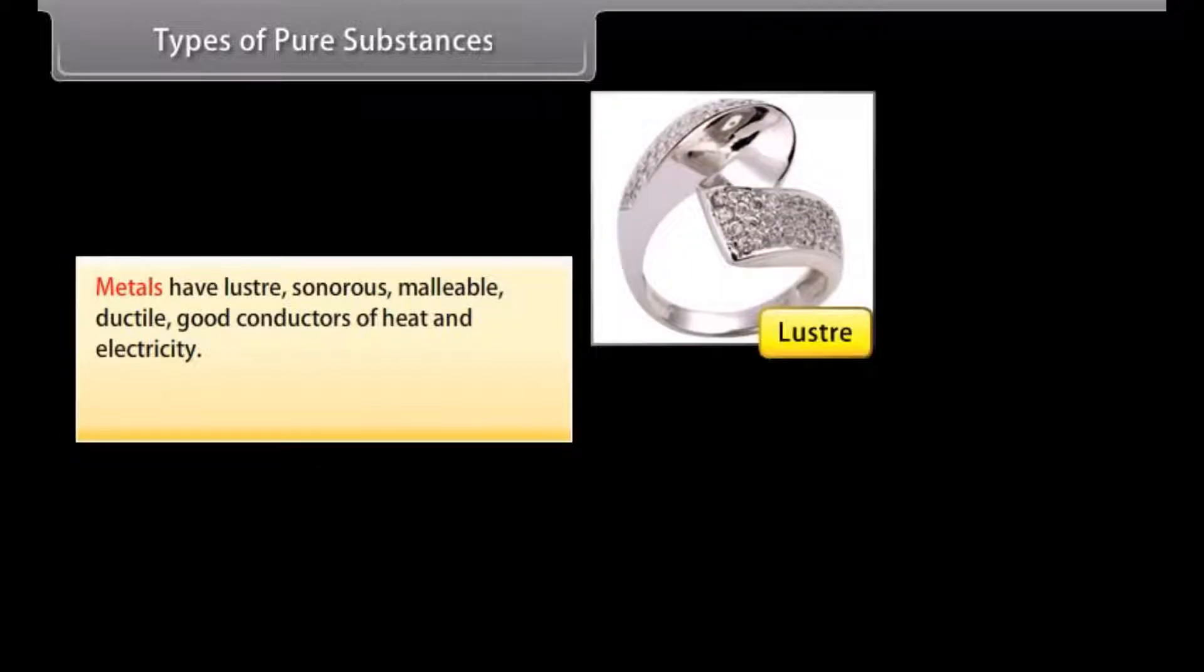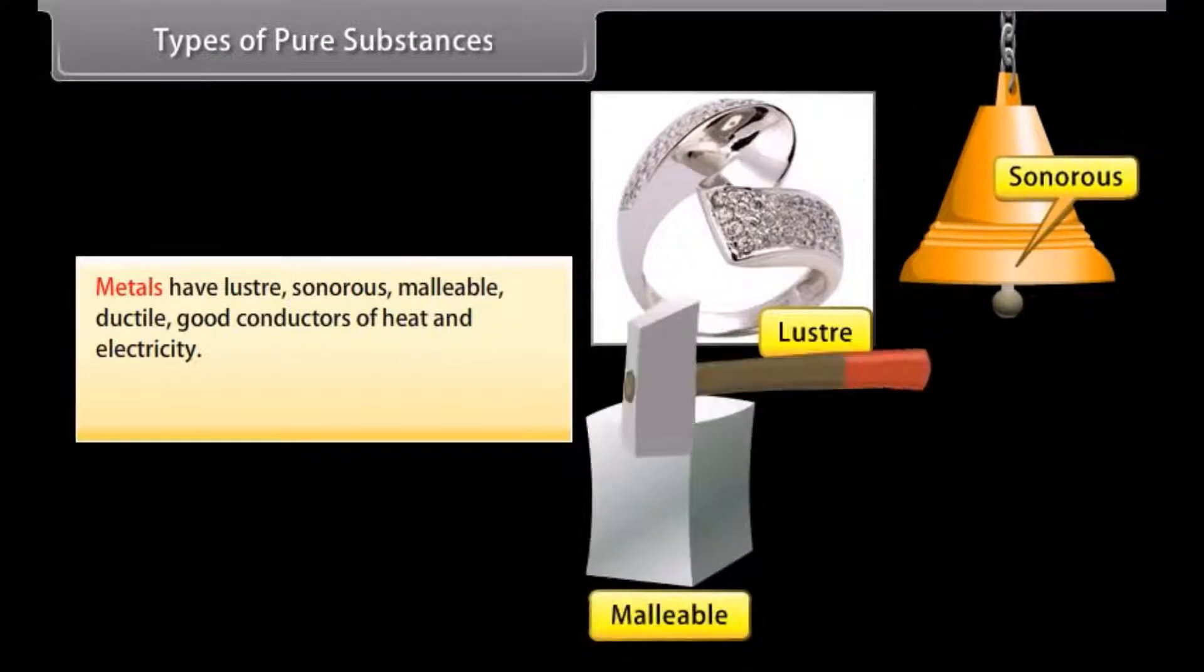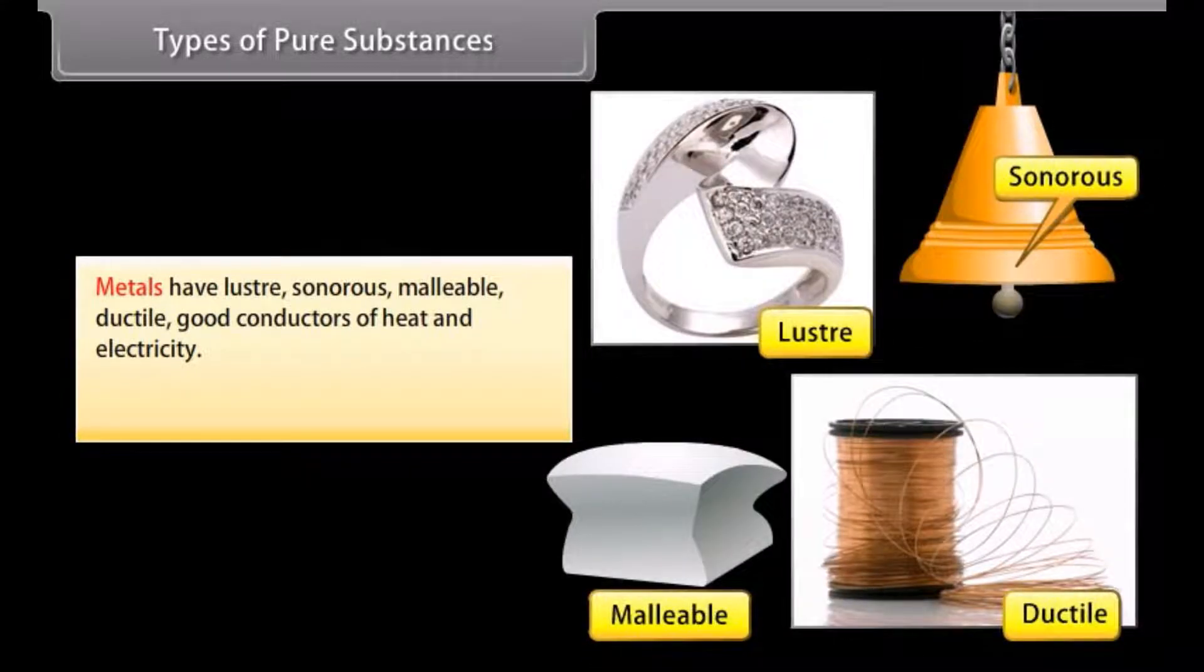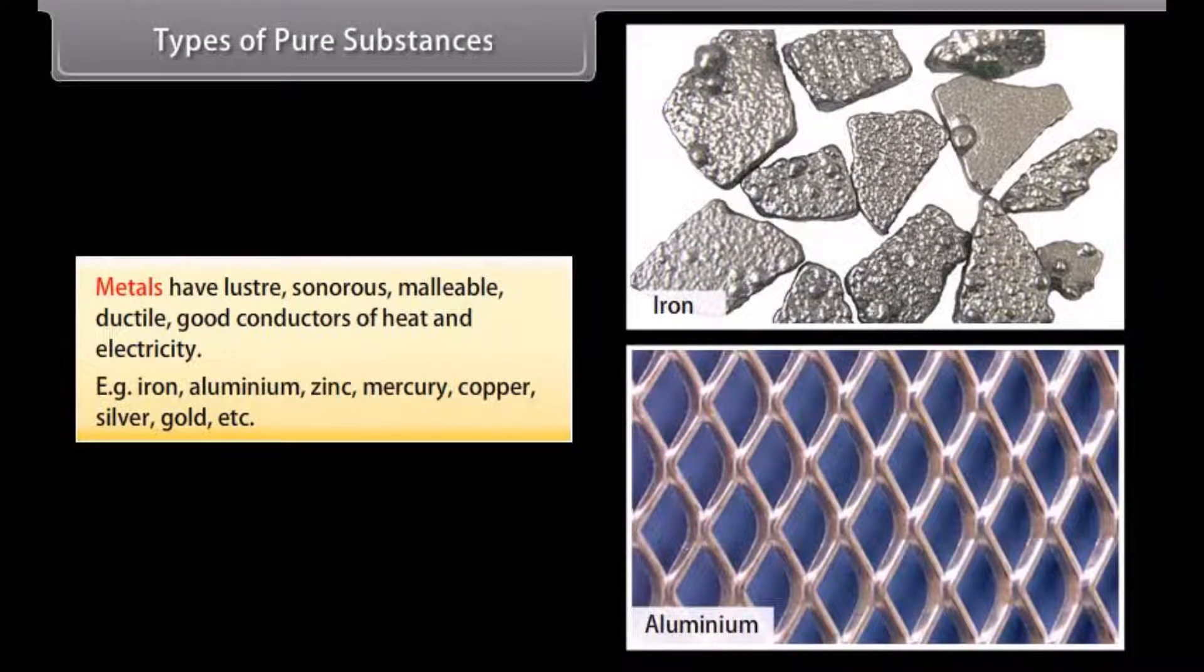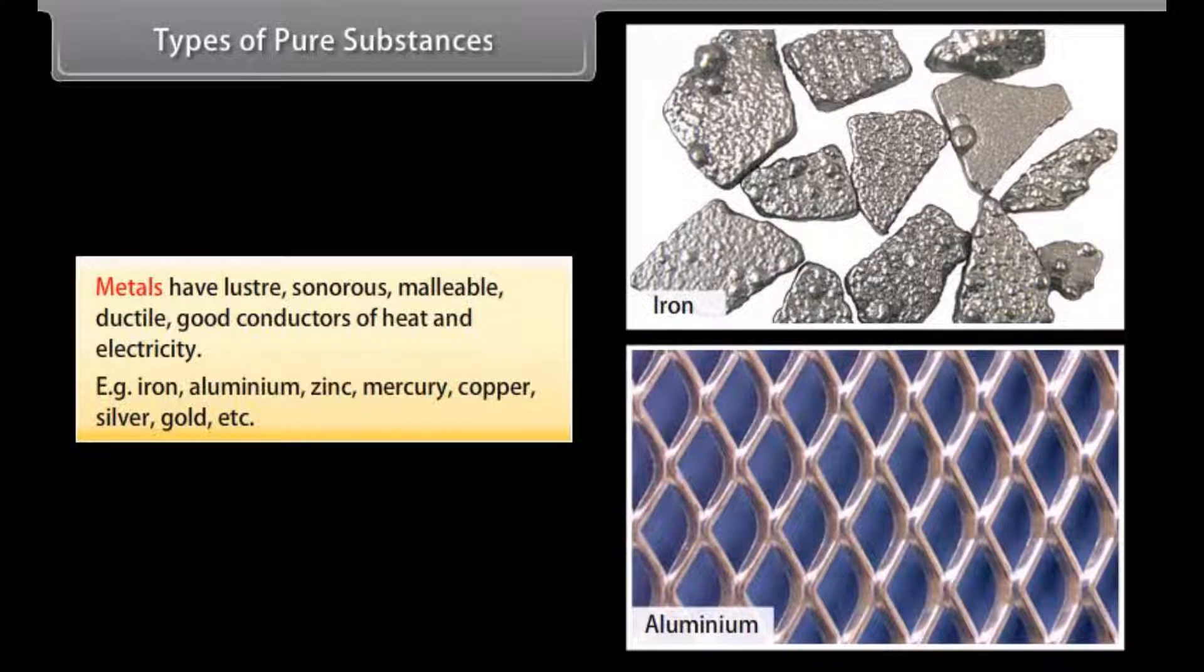Metals have lustre, are sonorous, malleable, ductile, and good conductors of heat and electricity. Examples include iron, aluminium, zinc, mercury, copper, silver, gold, etc.